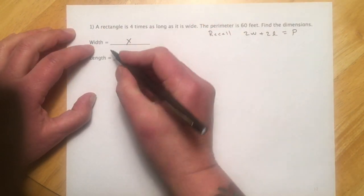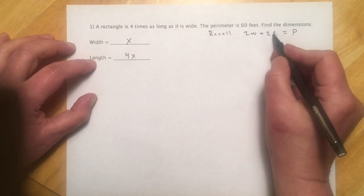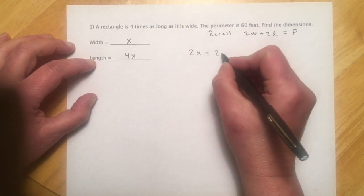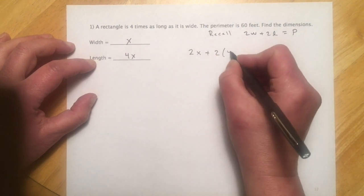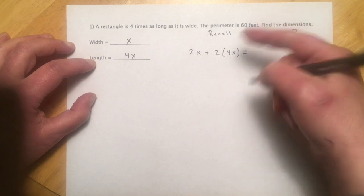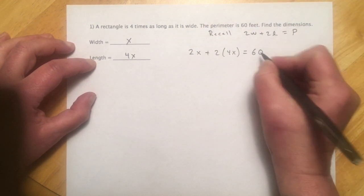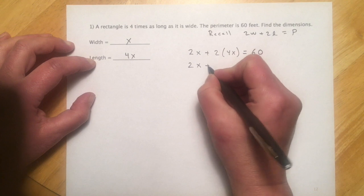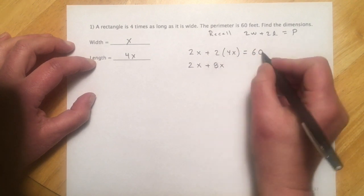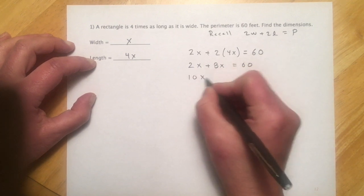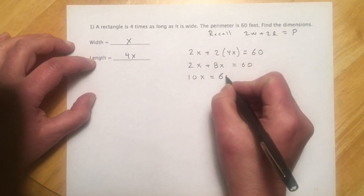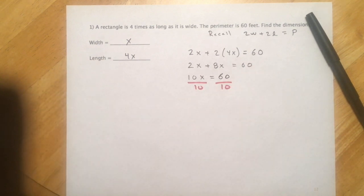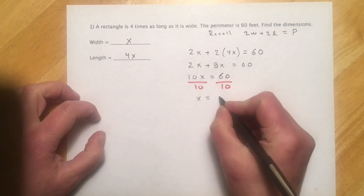So my W equals x, my L equals 4x, I can plug into here. So I'll have 2 times W, which I'm calling x, plus 2 times the length, which is this 4x. That equals the perimeter of 60 feet. Cleaning this up a little bit, 2 times 4 is 8x, and that's going to equal 60. So 10x equals 60, and divide over by 10.